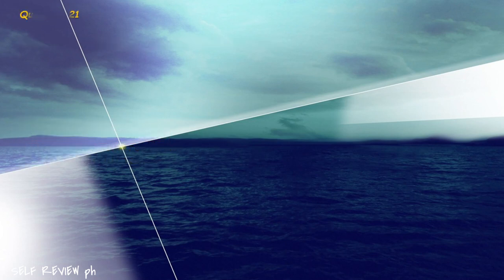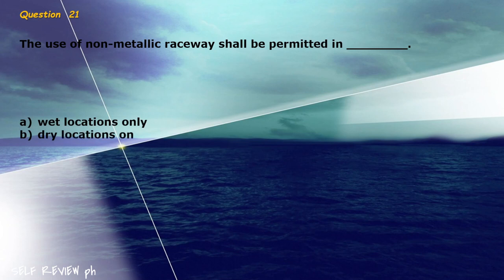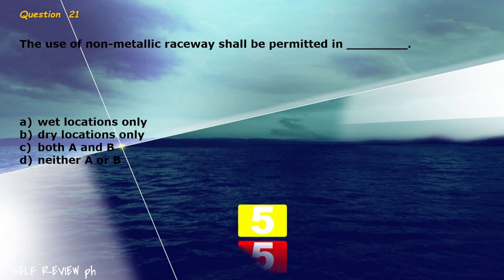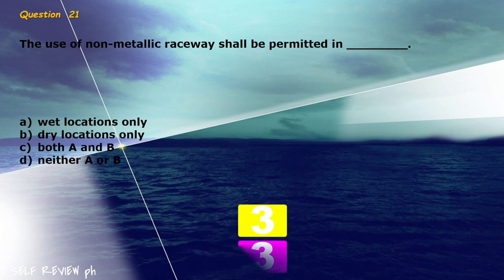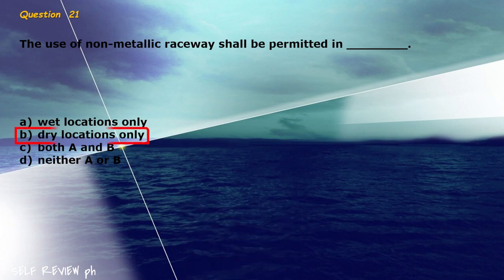Question 21: The use of non-metallic raceway shall be permitted in blank. A) wet locations only, B) dry locations only, C) both A and B, D) neither A or B. The correct answer is letter B, dry locations only.